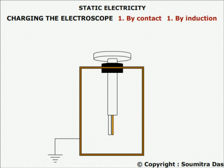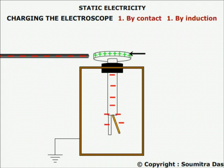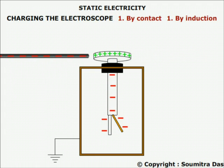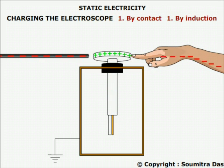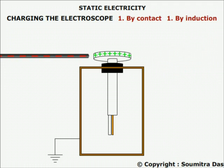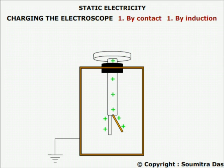2. By induction: by bringing the charged rod very near to the metallic disc. Bound charge is created on the metal disc, which is opposite to that of the charged rod. Free charge is created on the gold leaf and metal plate. This free charge is discharged by touching the metal disc while keeping the charged rod in position. Then the charged rod is removed, the bound charge spreads, and the electroscope is charged with the opposite charge of the charged rod. The leaf diverges again.